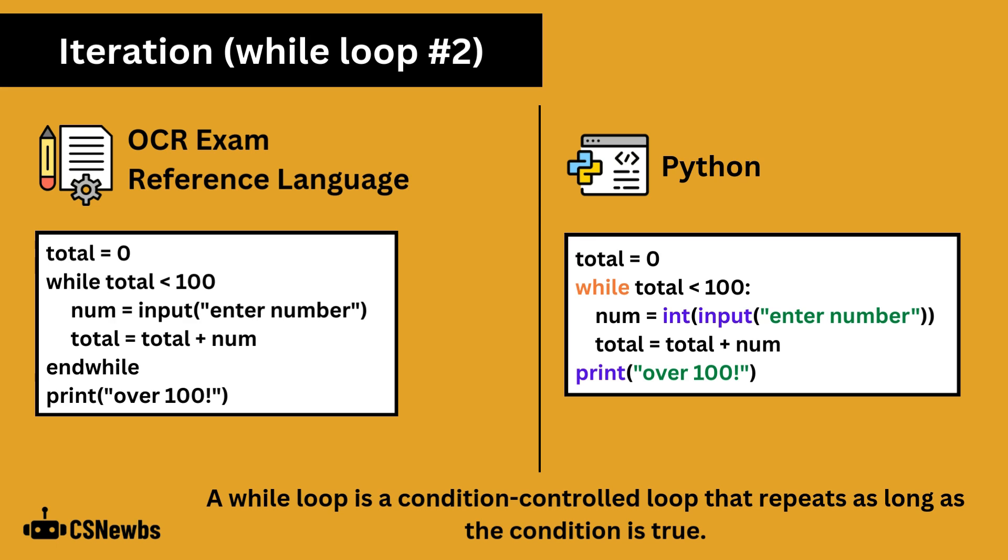Here is another example of a while loop. It repeatedly inputs numbers and adds them to a total, as long as the total is less than 100.